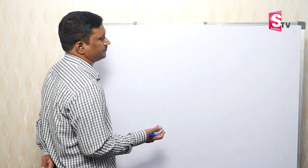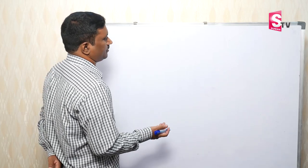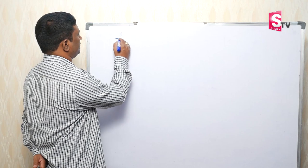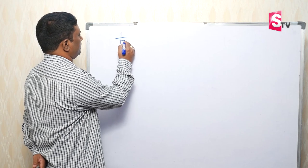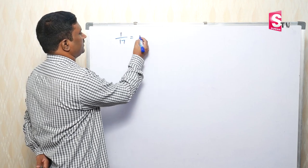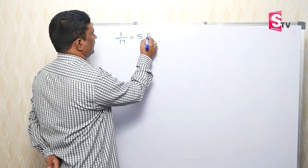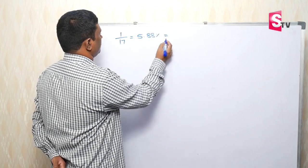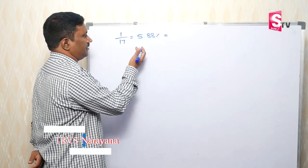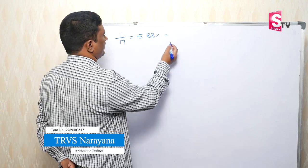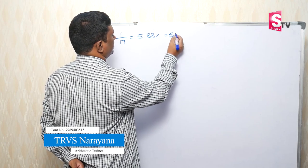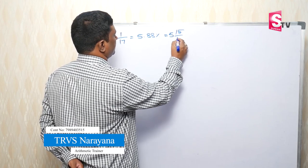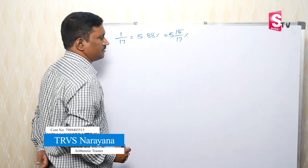So, 1 by 15, next to 1 by 17. 5.88 percentage, 5.88 percentage. 17, 5 is 85. 15 by 17 percentage, right.